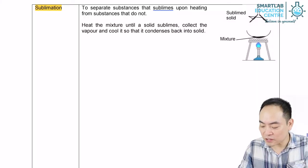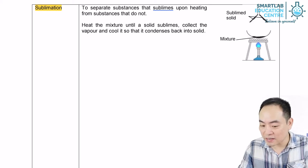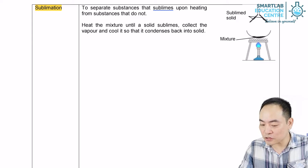Some substances such as ammonium chloride and iodine sublime upon heating. Sublimation occurs when the solid substance changes into a gas directly without melting.